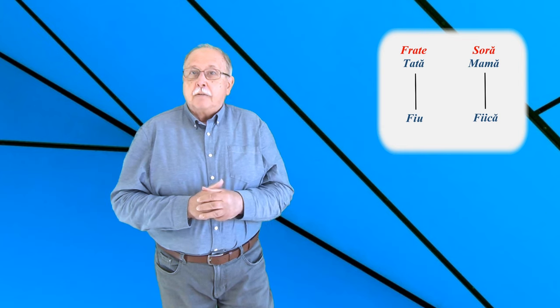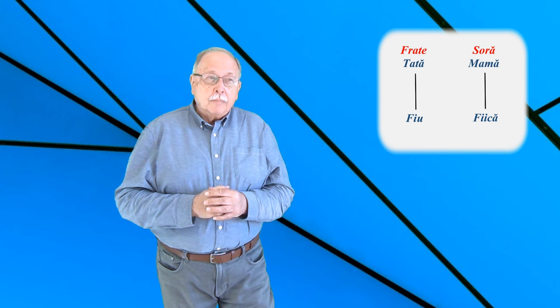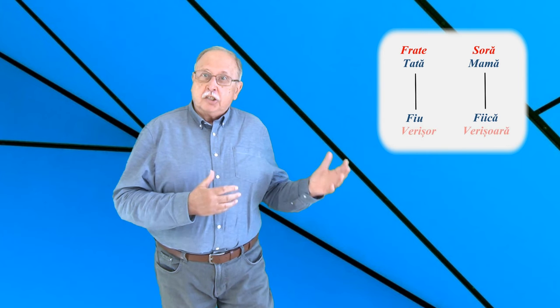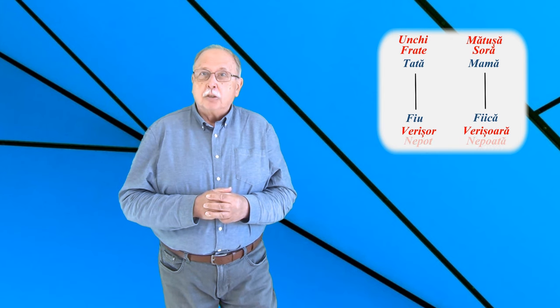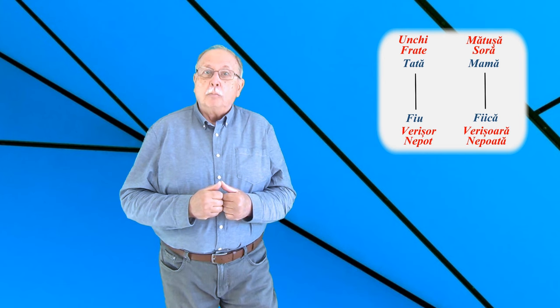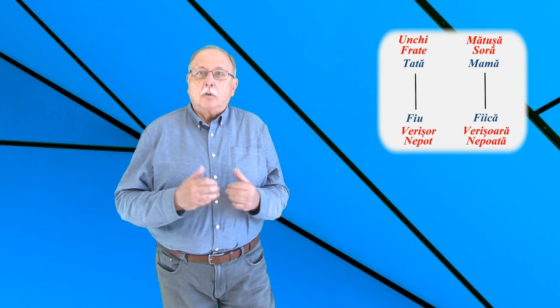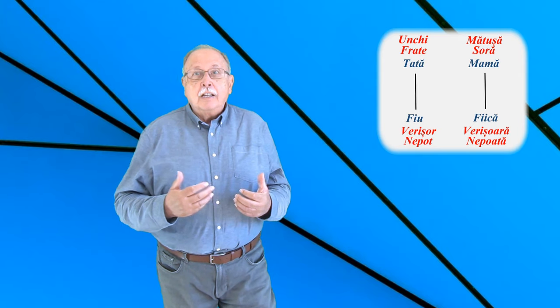Și atunci avem, așa cum am spus, frate și soră, mamă și tată, fiul și fiică, dar avem și verișor și verișoară, unchi și mătușă, nepot și nepoată. Răspunsul corect este deci acela că numărul minim de persoane pentru a avea toate relațiile familiale specificate este 4.